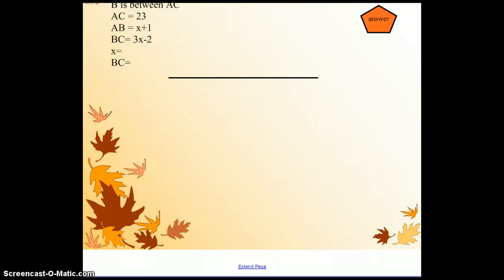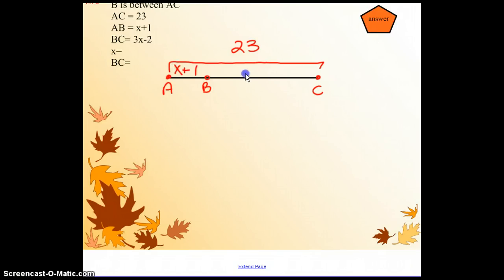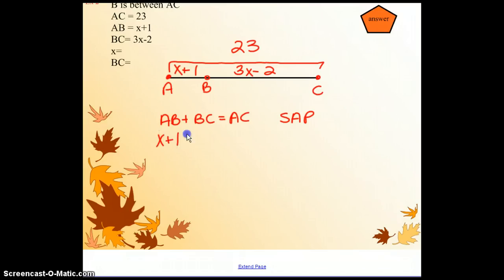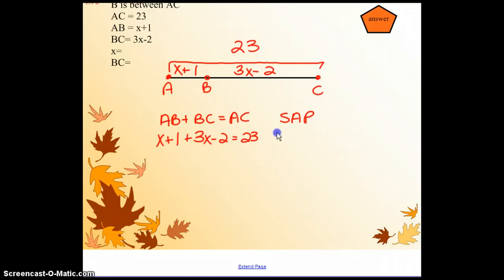What happens if B is between AC and we have some algebra? Let's make sure we can brush up on our algebra. We know B is somewhere in here. AC is 23, AB is X plus 1, BC is 3X minus 2. Again, starting with the segment addition postulate, we write AB plus BC is AC. We do some substitution. Feel free to go through this video at your own pace.